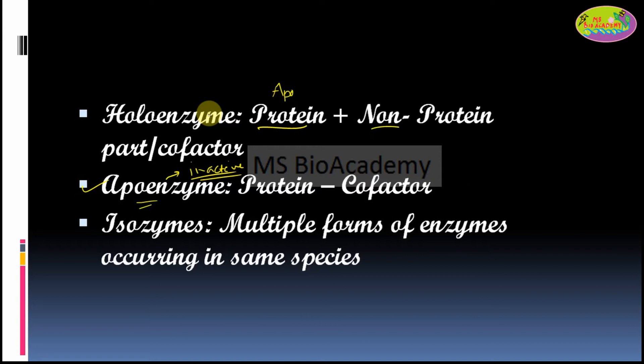Isoenzymes is a term given to enzymes that have multiple forms occurring in the same species. Multiple forms of an enzyme are present, but they exist within the same species — these are called isoenzymes, or isozymes. One particular reaction can be carried out by many different enzymes, and those are called isozymes.